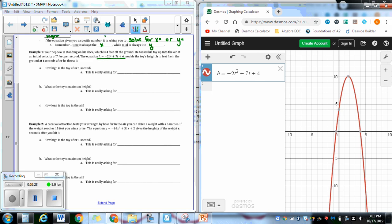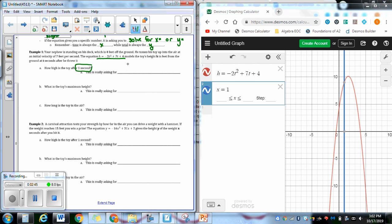So the first question says, how high is the toy after one second? So you'll notice that it gives us a specific number, so it's asking me to either do x equals or y equals. It gave me one second, so that's a time measurement. So I'm going to look where x equals 1 and find the crossing point. So if I look at the crossing point on Desmos, they cross at 1,9, so that would be 9 as my answer, 9 feet, since that's what I am measuring the height in.